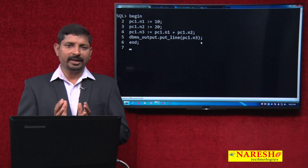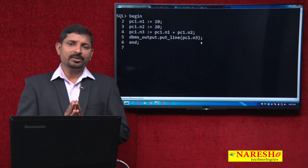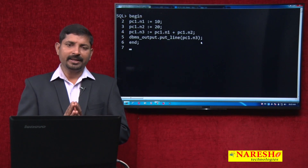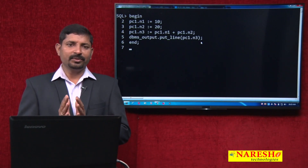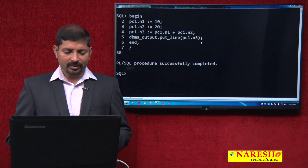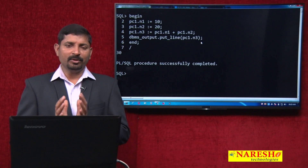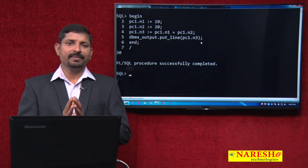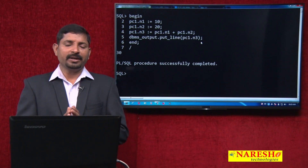Look at this program — there is no declare block. I am going directly to the begin block, and in the begin block I am using those variables: PC1.n1, PC1.n2, PC1.n3. Using those variables, I am doing the addition operation. Look at the output here. So package variables are global variables and they can be used in this way. You just need to declare them in the package specification, and then with the package reference and variable reference, you can use them in any program in your application.